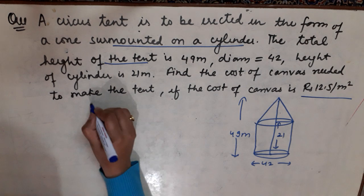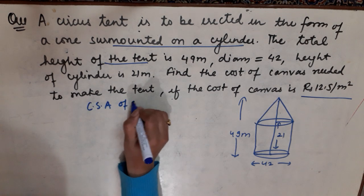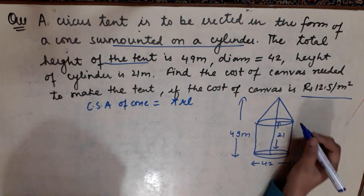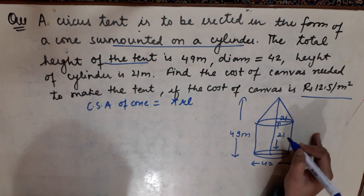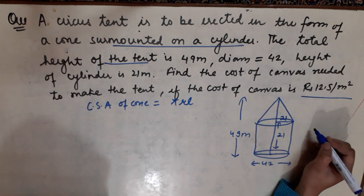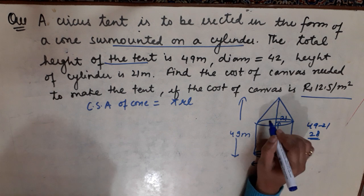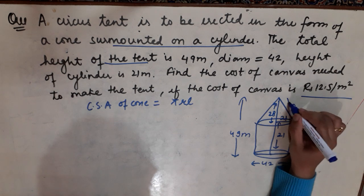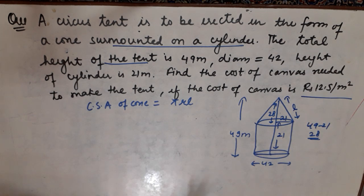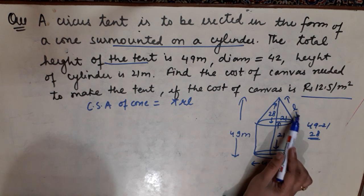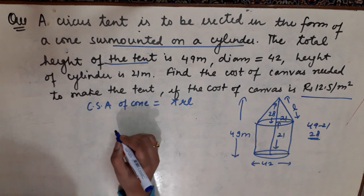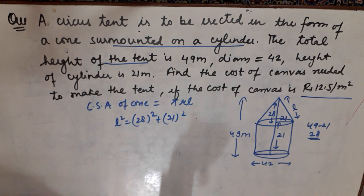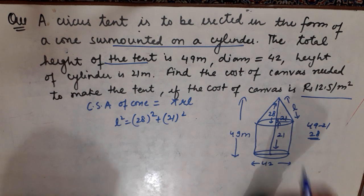The curved surface area of the cone is π R L. Since the diameter is 42, R will be 21. The total height is 49 and the cylinder height is 21, so the cone height is 49 minus 21, which is 28. Now we need L, the slant height. By Pythagoras theorem: L² = 28² + 21².